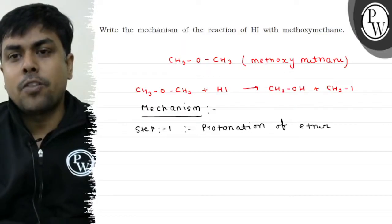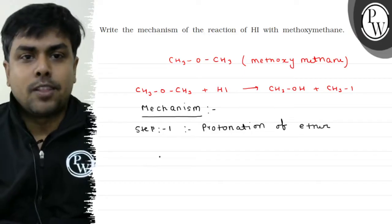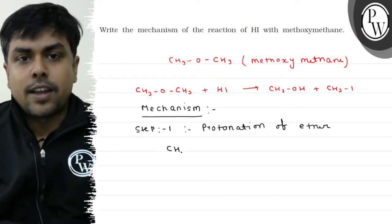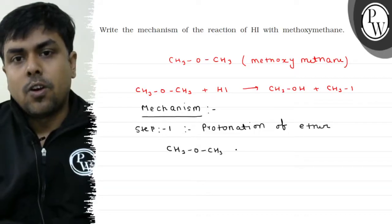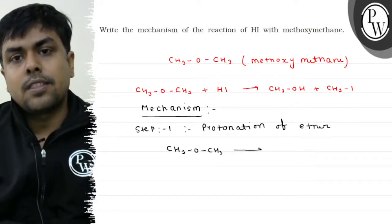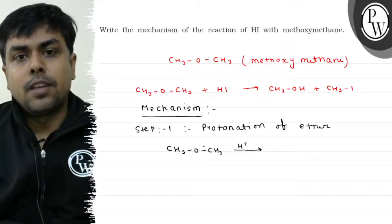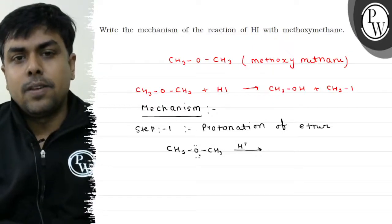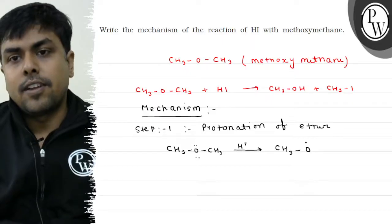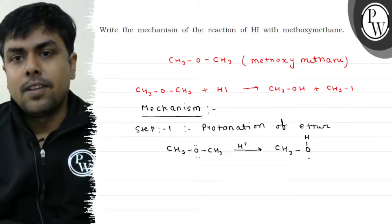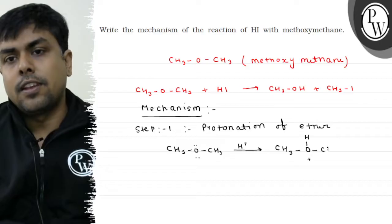The ether is methoxymethane. So I can write CH3-O-CH3 on treatment with H+. This will give me—what will happen? Acid-base reaction. Ether is a Lewis base. This will react, and I will have the formation of CH3-O(H+)-CH3.